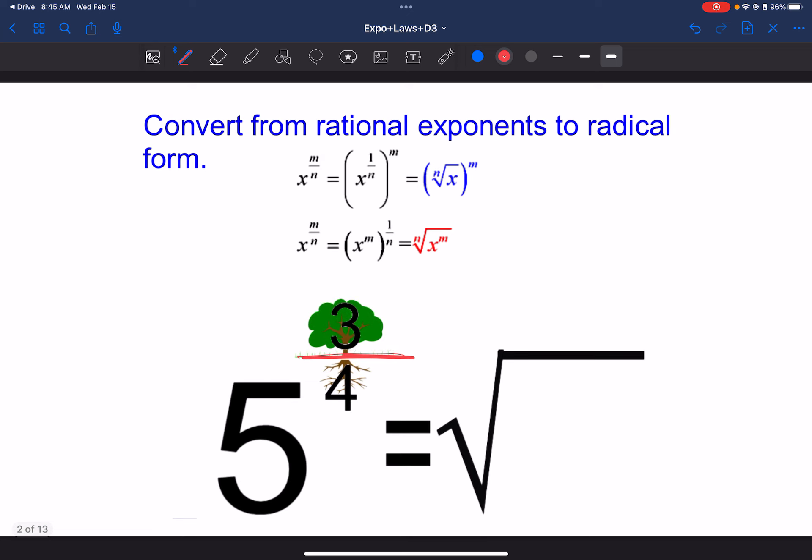Where what we'll do is the root bit, the stuff on the bottom here, we can put out here. And then the rest of it, so the 5 and the exponent, we can put on the inside. And so that's our way of converting. And we also go the other way.